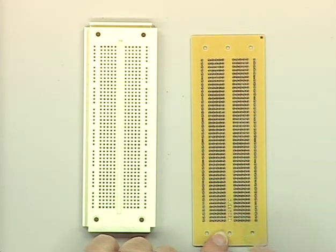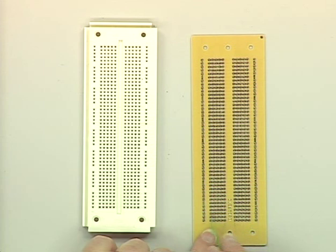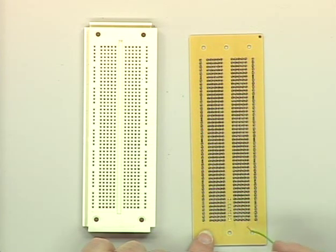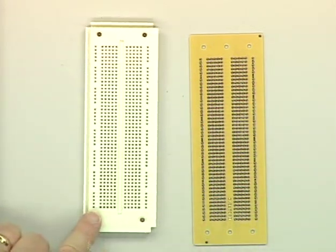And we've got holes here that are all connected together. And each row is connected, but these rows over on this side aren't connected over here. You can see the gaps between them. So these five holes are connected together. The next five are connected together, but they're not connected to each other.